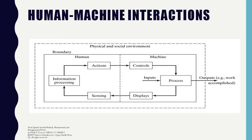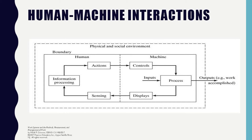The figure shows that human performs actions to control machine operations for processing, which then goes to a display. There are issues that need to be resolved to optimize the different system interactions. As an ergonomist, to enhance the system, you can trace the flow: action → control → machine → process → display → sensing → information processing.